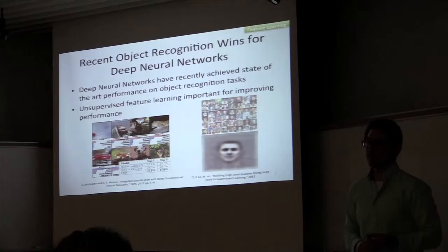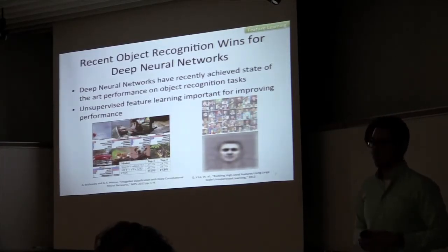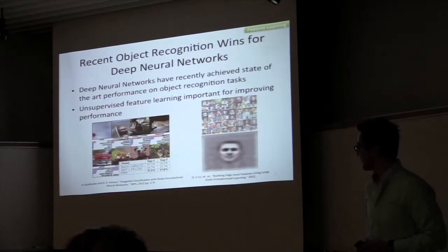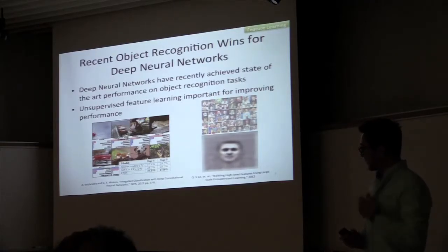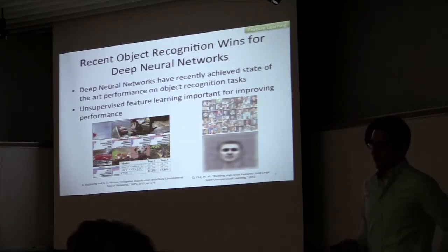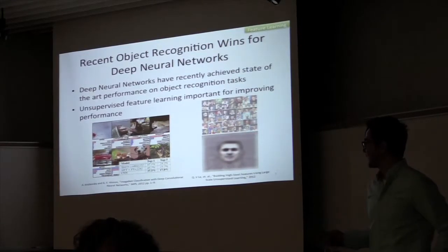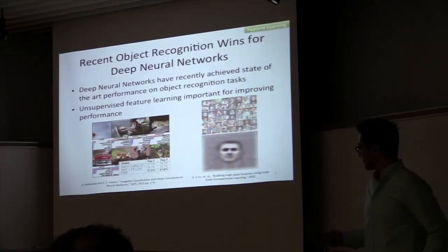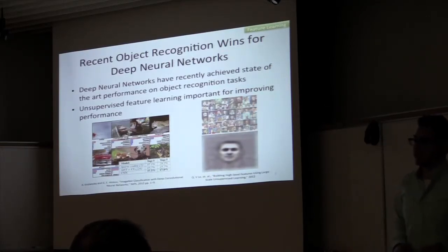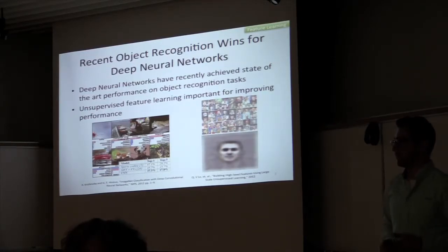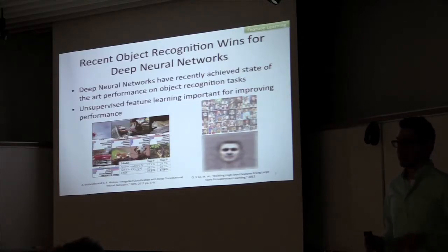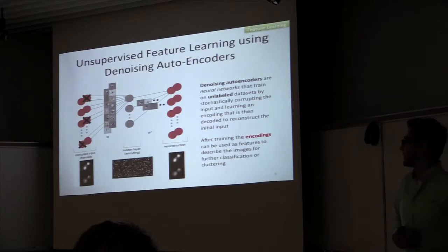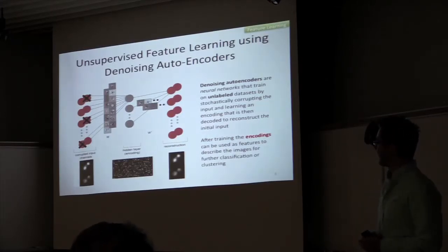Some examples of where these techniques have been really powerful are in object recognition tasks. One is from Jeff Hinton's group at UT, where they beat other groups by about 8% error rate on the ImageNet database, classifying 1.2 million images into a thousand classes and achieving a 17% error rate within their top five guesses. Another example is from Andrew Ng's group at Stanford, where they used a deep network trained completely unsupervised on 10 million random frames from YouTube images, and without any labeled data this network was able to detect faces with about 80% accuracy. These results inspired me to use these techniques for high-content screening images, and one approach I've used is a denoising autoencoder.